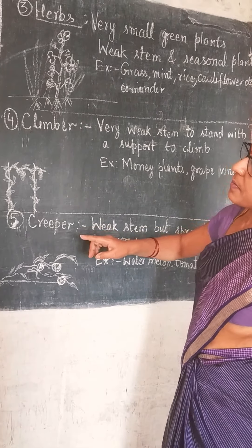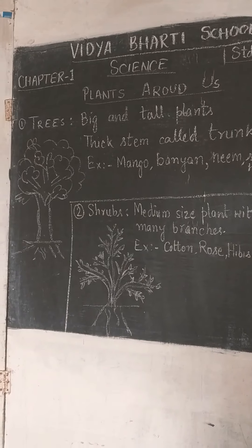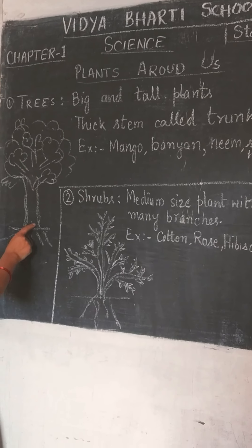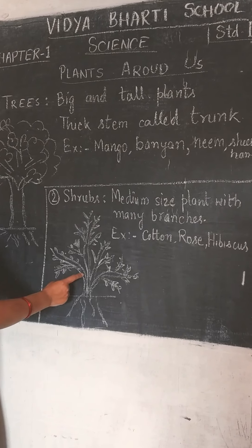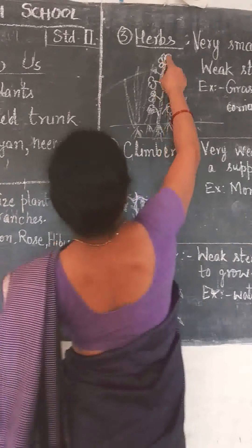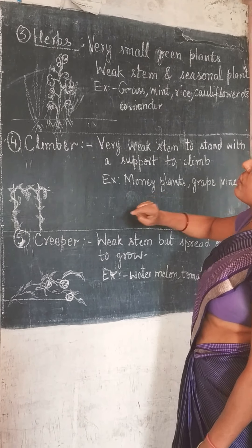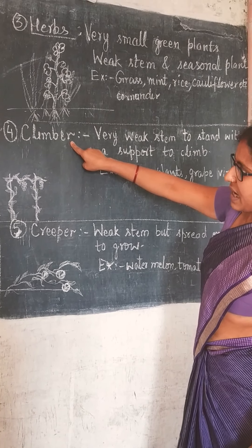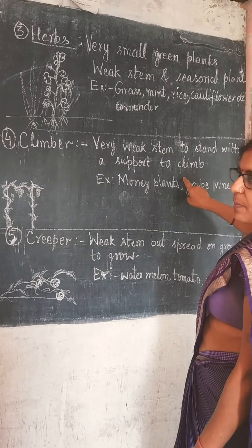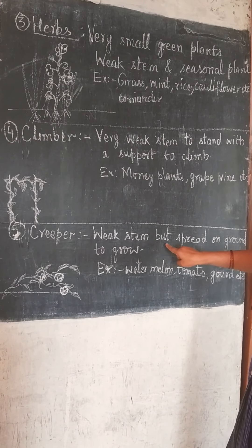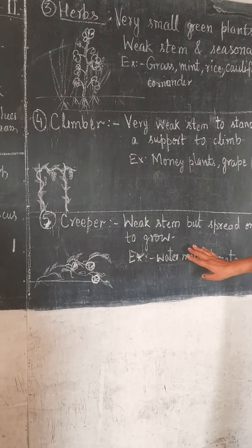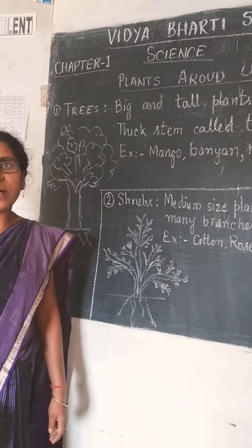So we have seen here that plants are divided into five types. First - Tree, which are big and tall plants with a thick trunk. Second - Shrub, which is medium-sized with many branches. Third - Herb, which are small and weak plants. Fourth - Climber, which need support to grow upward. Fifth - Creeper, which spread on the ground. Now your work is to read this chapter.